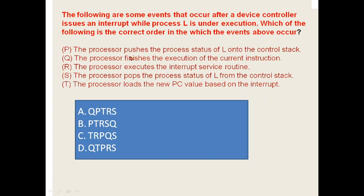For the answer we have to select which of the following is correct. The options given are: P — the processor pushes the process status of L onto the control stack; Q — the processor finishes the execution of the current instruction; R — the processor executes the interrupt service routine; S — the processor pops the process status of L from the control stack; and T — the processor loads the new PC value based on the interrupt. We need to arrange these sentences in the correct order and select the answer option.